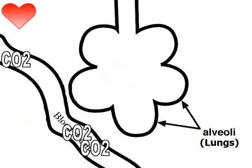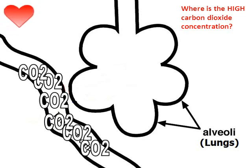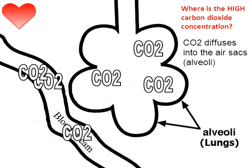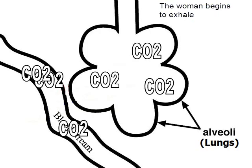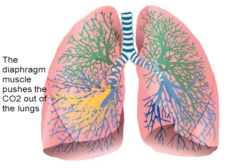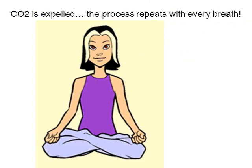Your heart is pumping blood now full of carbon dioxide, and this carbon dioxide-rich blood is going to go back to the lungs. When we come back to the lungs, there's our air sac called the alveoli, and the heart is pumping carbon dioxide back. The high carbon dioxide concentration is in the blood, so carbon dioxide will simply diffuse from a high concentration in the blood to a low concentration in the alveoli. Now that CO2 is back in the lungs, we simply begin the exhale. The woman exhales, and you also have a muscle called the diaphragm underneath your lungs that helps push out some of the carbon dioxide. The process repeats with every breath.